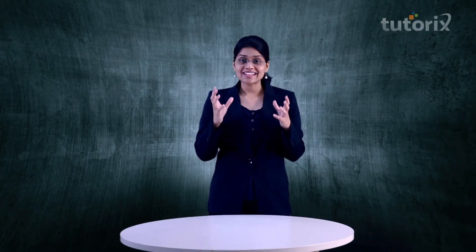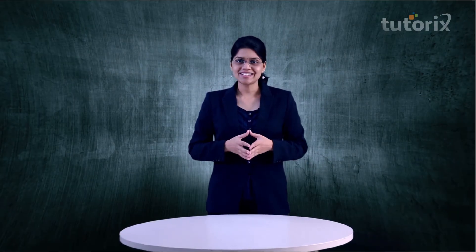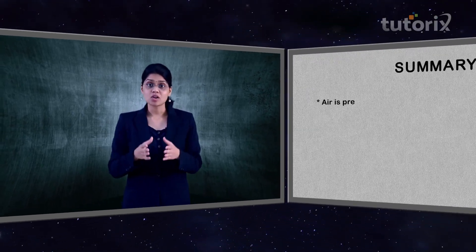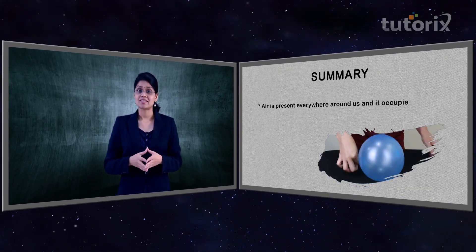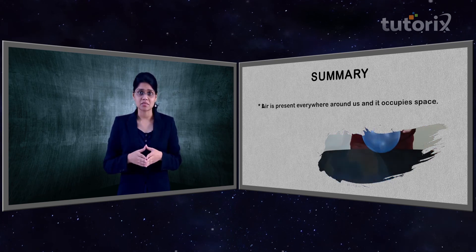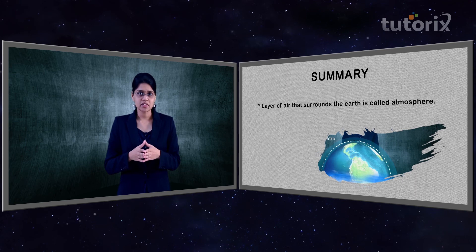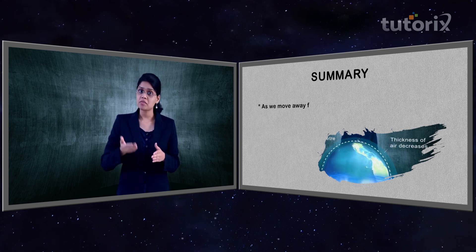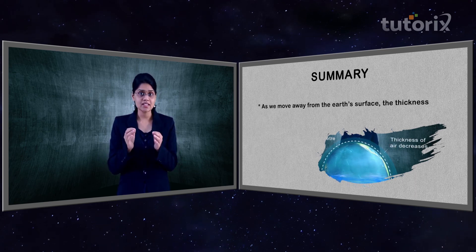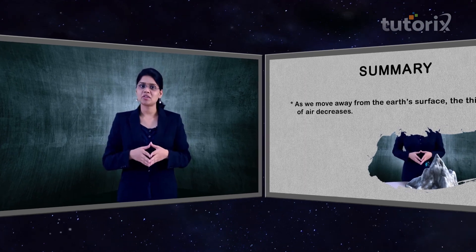There were some interesting things we learned about air, isn't it? So, to summarize, we saw that air is present everywhere around us and it occupies space. The layer of air that surrounds the earth is called atmosphere. And as we move away from the earth's surface, the thickness of air decreases. In the next video, we will discuss all about the properties of air.